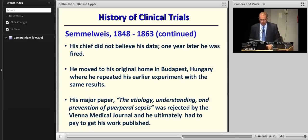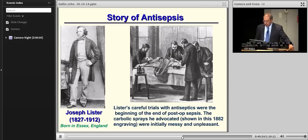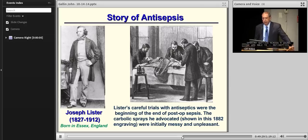Joseph Lister, who lived from 1827 to 1912, did careful trials on antiseptics, particularly in the surgical setting — spraying antiseptics across wounds and showing a huge decrease in infection rates. Have you ever heard of Listerine? It's named for Joseph Lister.